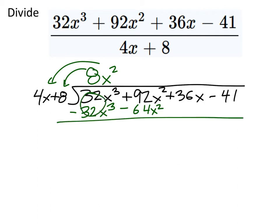So 8x squared times 4x, 32x cubed. And then 8x squared times 8 would be 64x squared. But that's what I'm taking away from that expression. So those zero out just like we wanted to, the 32x cubed.